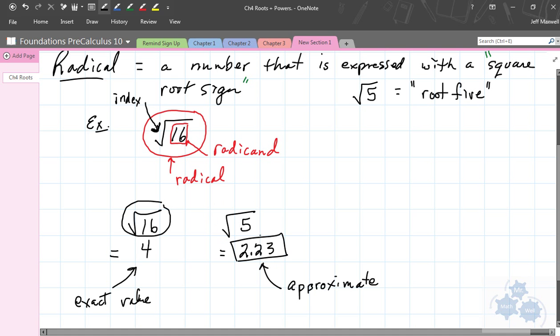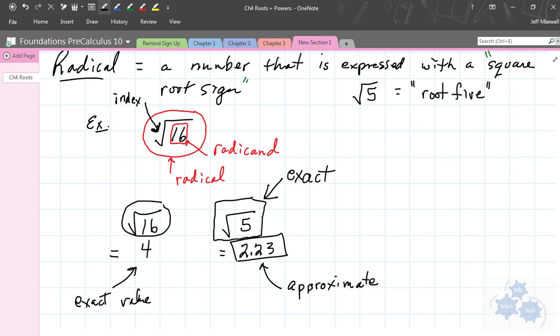The reason why radicals are important and why we need to use them is because this is the only way of expressing this value as an exact number. Root 5 is the expression of the exact value there. 2.23 is just rounded, just approximate.